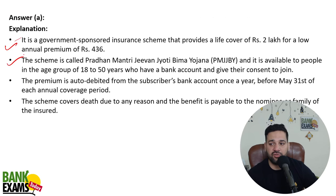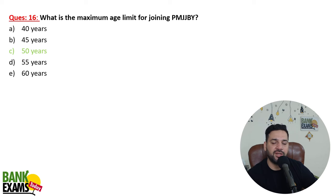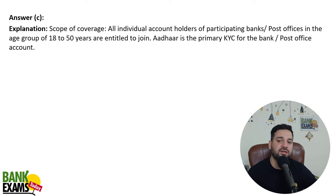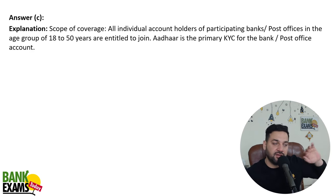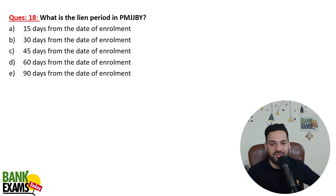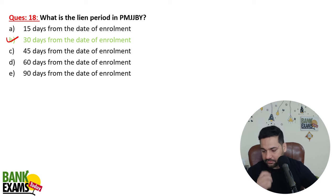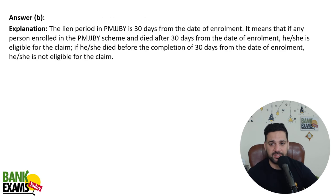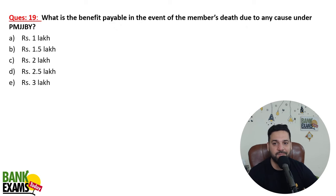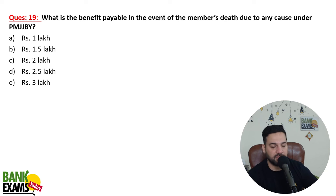If your age is between 18 to 50 years, you can join the PMJJBY scheme. The maximum age limit to join is 50 years, but if you have already joined, you can pay the premium till 55 years. So joining maximum age is 50, and the maximum age to remain in the scheme is 55. The lean period is 30 days — if somebody takes the insurance and dies within those 30 days, they will not get cover. Coverage starts after 30 days of entering the policy.